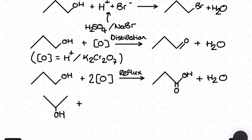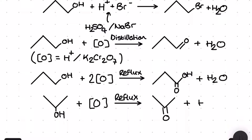Just keep an eye on the balancing there because there's a two in front of the O in square brackets. For the next reaction we have a secondary alcohol — propan-2-ol — and this gets oxidized under reflux to form a ketone.